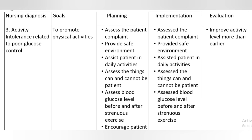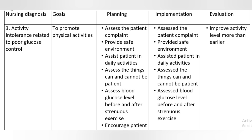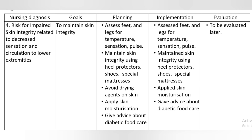Nursing Diagnosis 3: Activity intolerance, related to poor glucose control. Goal: to promote physical activities. Planning and Implementation: assess the patient's complaint, provide safe environment, assist patient in daily activities, assess what the patient can and cannot do, assess blood glucose level before and after strenuous exercise, encourage patient to eat a carbohydrate snack before exercising to avoid hypoglycemia. Evaluation: improve activity level more than earlier.